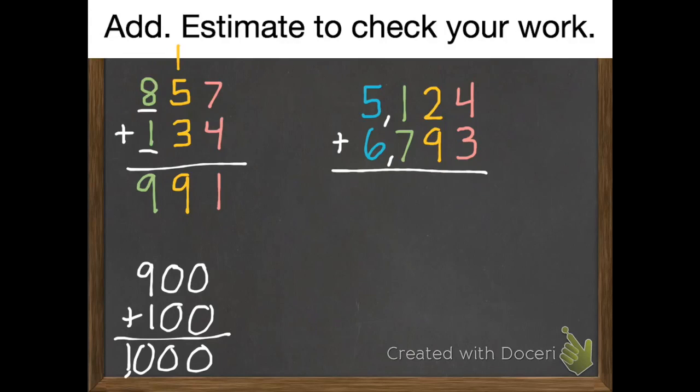Second problem. At our ones, four plus three is seven. At our tens, two plus nine is eleven. So we can make one hundred and have one ten left. At our hundreds, one plus one plus seven is nine.